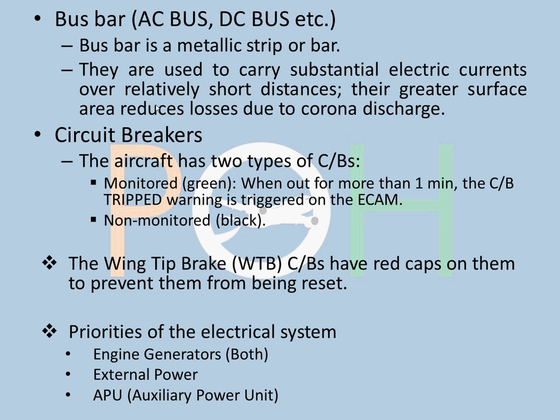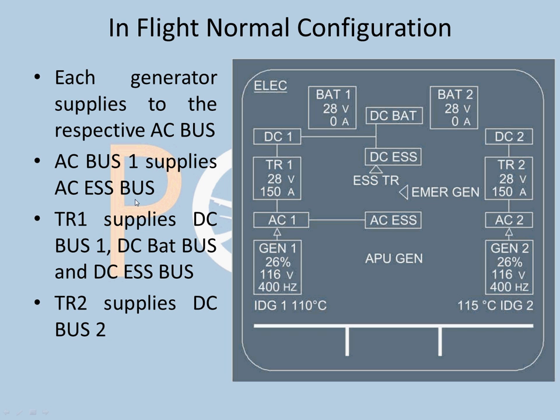An important point about the electrical system is the priority order. Engine generators have priority over external power, and external power has priority over the APU. So any decision is made in this order: first engine generators, then external power, then the APU. Now let's talk about configurations — I will also explain the failures.